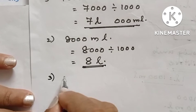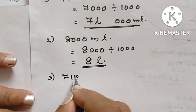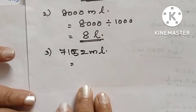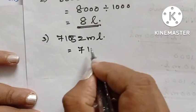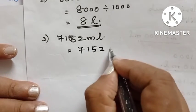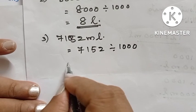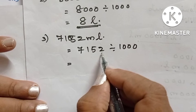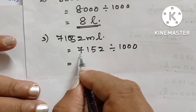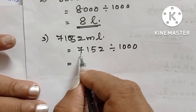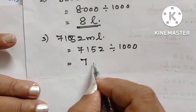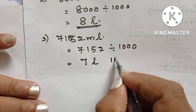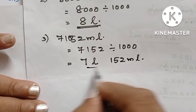The third question is seven thousand one hundred and fifty-two milliliters. We are dividing by one thousand. Taking three places from the right side, seven is the quotient and one hundred and fifty-two is the remainder. Therefore, the answer is seven liters and one hundred and fifty-two milliliters.